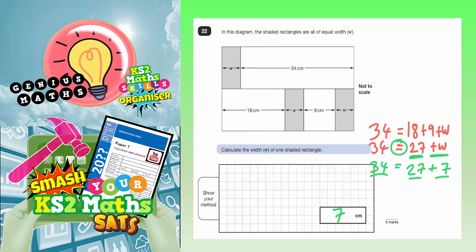So, W is worth 7. We'll replace that with a 7, that with a 7, and that with a 7. Now, let's see what we've got on the top set of rectangles there.